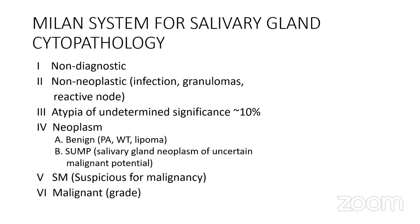For salivary gland cytology, the Milan system is used for reporting. Categories include non-diagnostic, benign/non-neoplastic (e.g., granulomatous lesions or reactive lymph node), atypia (category 3), benign neoplasm such as Warthin tumor (category 4A), salivary gland neoplasm of uncertain malignant potential for small basaloid cell tumors where you cannot distinguish adenoid cystic from basal cell adenoma, suspicious for malignancy, or malignant.